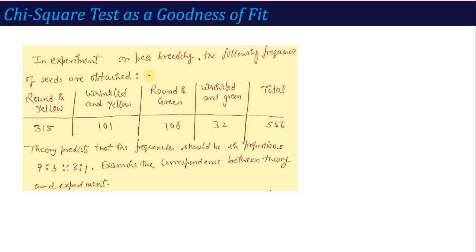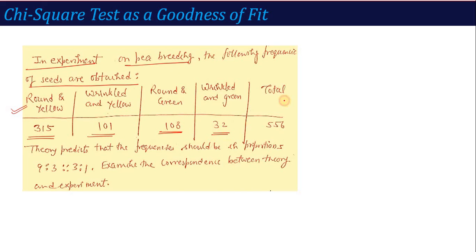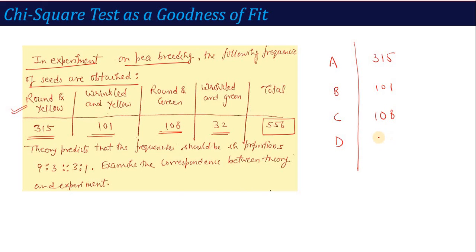Problem 1: Chi-Square test as goodness of fit. In an experiment on plant breeding, the following frequencies of seeds are obtained: Round and yellow — 315 seeds; Wrinkled and yellow — 101; Round and green — 108; Wrinkled and green — 32. Total: 556 seeds. So we have 4 categories: A, B, C, and D, with 315, 101, 108, and 32 seeds respectively.